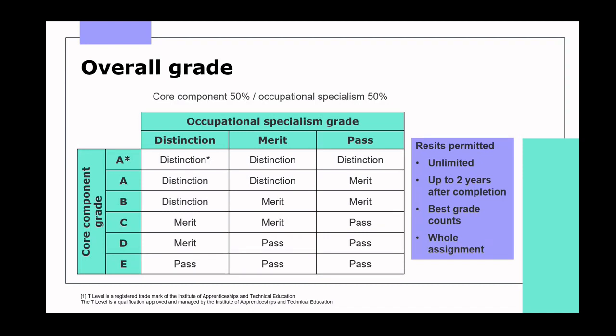When all assessment components are completed, you can use the grading matrix found in the specification. The overall weighting is a 50-50 split between the core component grade and the occupational specialism grade. So if a student got a B in the core component and a merit for the occupational specialism, the final grade for the technical qualification would be a merit, assuming they've completed all components including industry placement. Students can resit the occupational specialism assignments, and it is the best grade that counts.